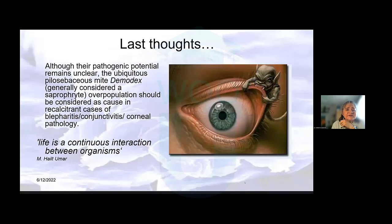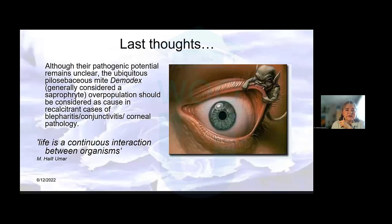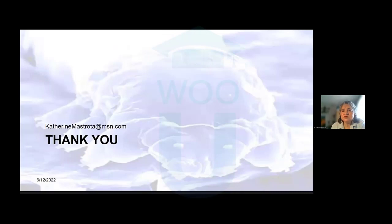Although their pathogenic potential remains unclear, the ubiquitous pilosebaceous mite demodex — generally considered a saprophyte — overpopulation should be considered as a cause of recalcitrant cases of blepharitis, conjunctivitis, and corneal pathology. And life in general is a continuous interaction between organisms, being your saprophyte, your spouse, your child, or your demodex. I thank you all for joining me.